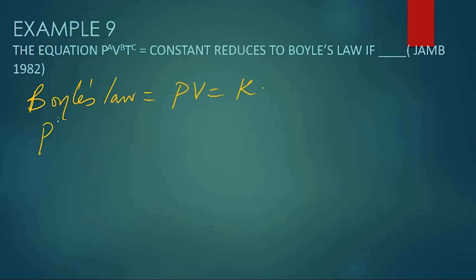Definitely we have P1 V1 equals P^A V^B T^C. From there, the value of A equals 1, B equals 1, and C equals 0.